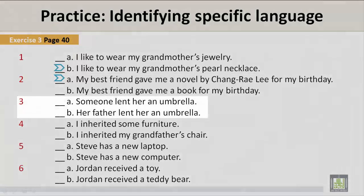Number 3. A: Someone lent her an umbrella. B: Her father lent her an umbrella. Option B is more specific: Her father lent her an umbrella.